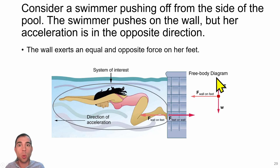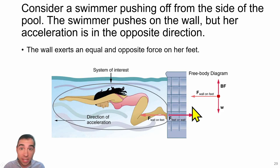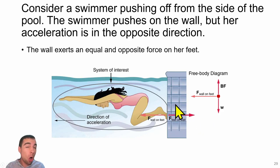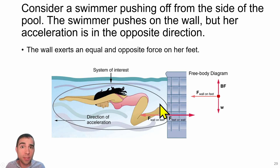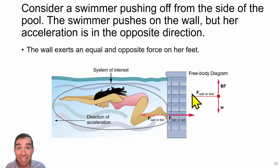For example, if you're swimming underwater, a swimmer would push off against the wall with an applied force. However, the wall also pushes on the swimmer with a reactionary force that pushes her forward and causes her to accelerate to the left.